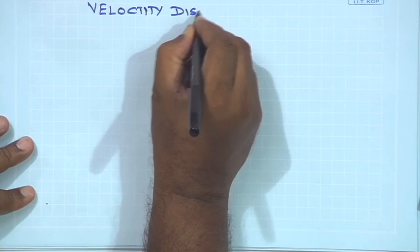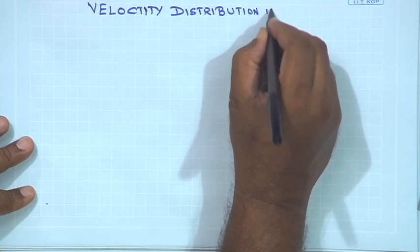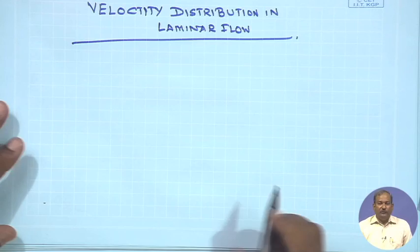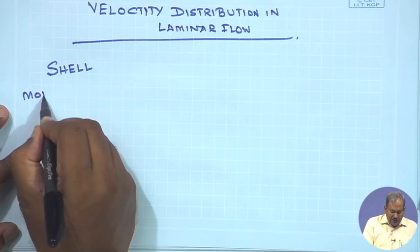What I will discuss more in this class is velocity distribution in laminar flow — how to obtain the velocity distribution — and in order to do that I will introduce a concept known as the shell momentum balance.